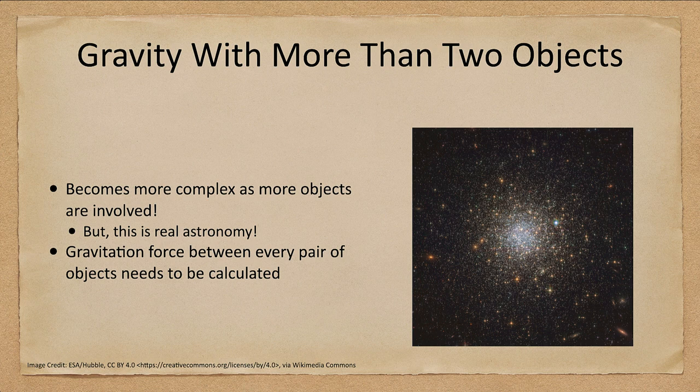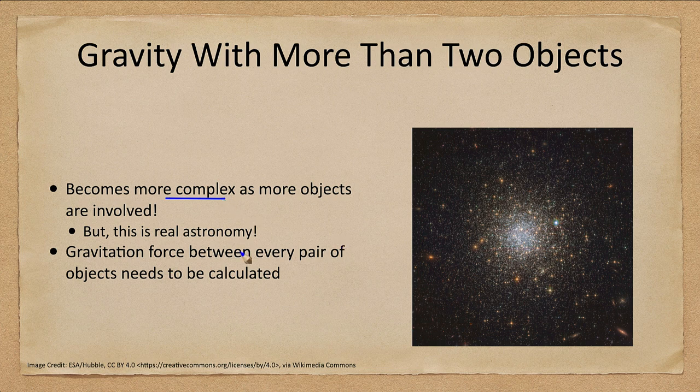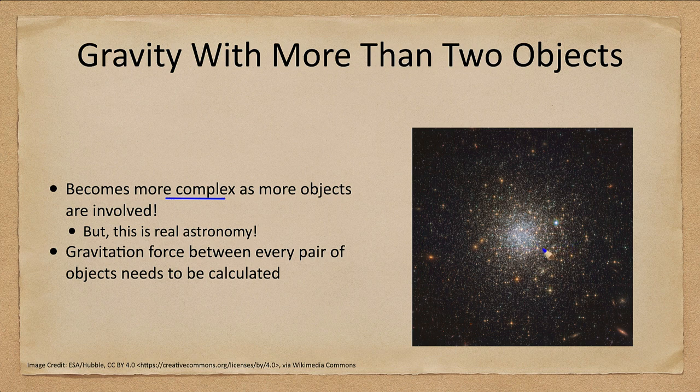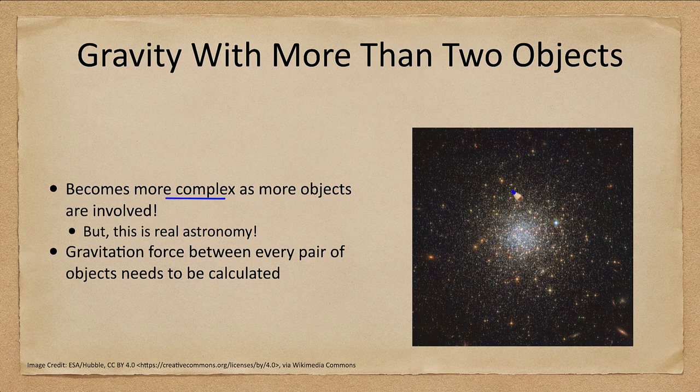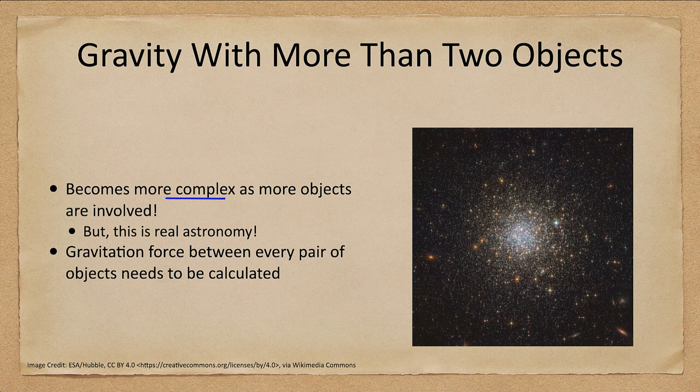Now, what if we look at more than two objects? Well, it gets very complex as we look at more objects. Here we see a globular cluster. And if you really want to figure out the orbits here, you need to look at every pair of stars and calculate the gravitational force and step forward in time and do all the calculations again. If there are hundreds of thousands of stars, there are billions of different pairs you can look at. And you have to calculate all those gravitational forces.